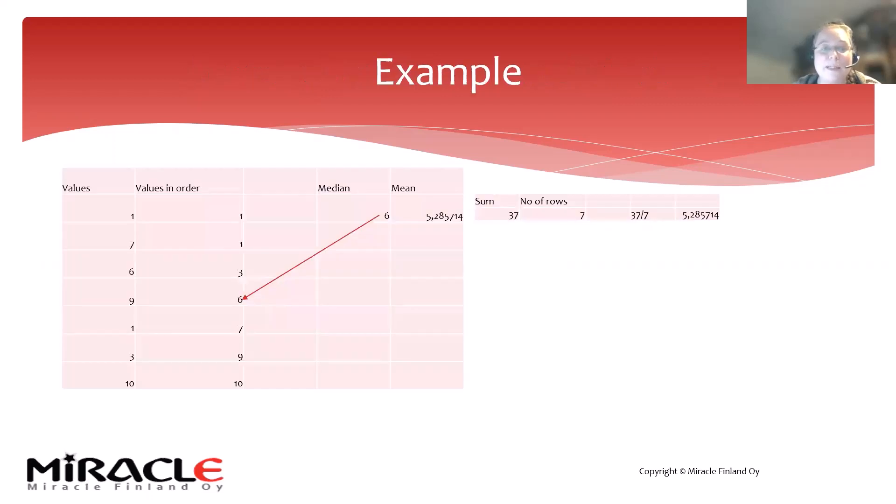Here's an example of my data set. I have values 1, 1, 3, 6, 7, 9, and 10. The median here is 6, while the mean is 5.28. It's not always the same thing because median and mean are different things.